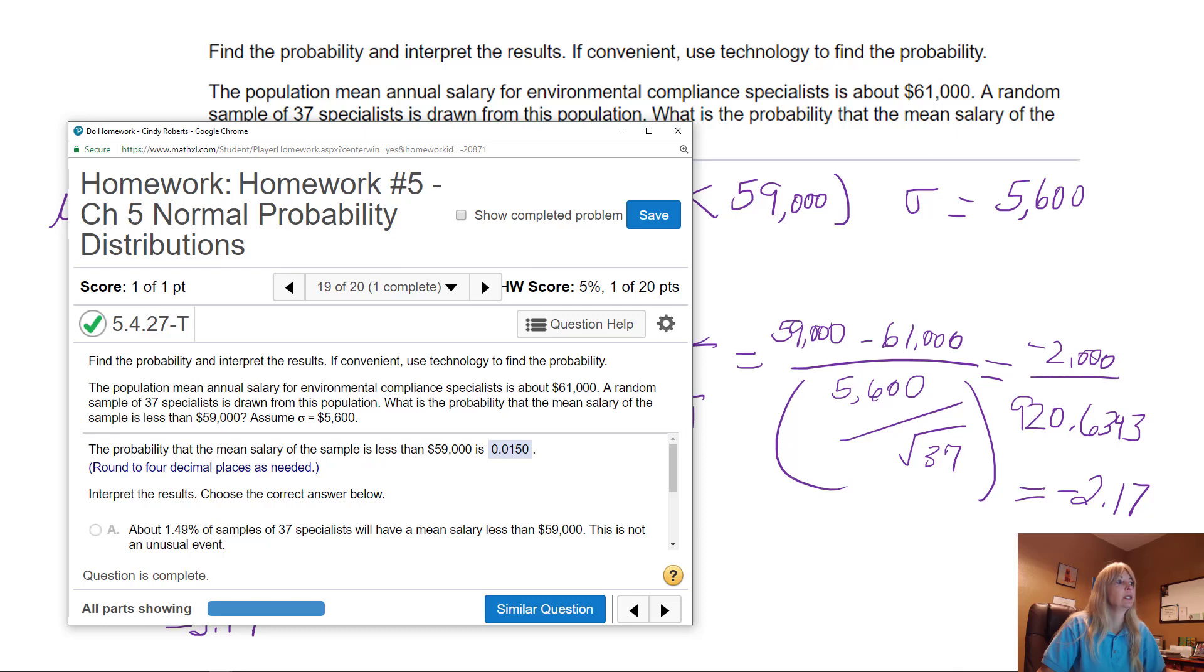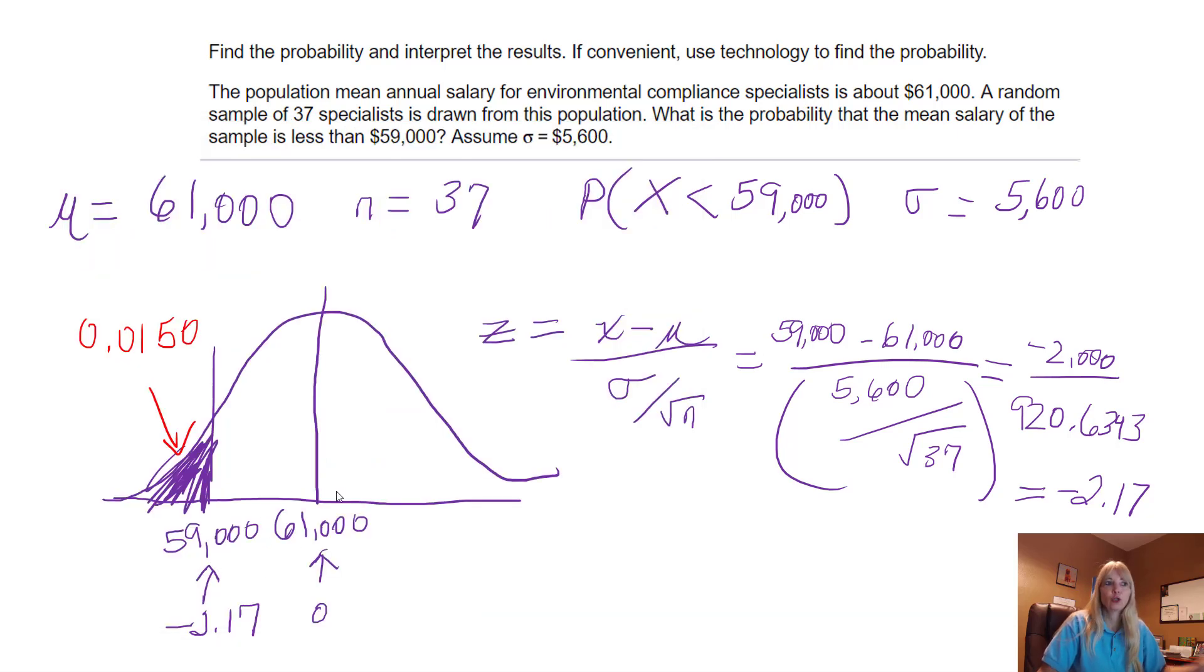Again, why? Because we call things unusual if it's more than two standard deviations away from the mean. Alright? And you know to do this bottom part, the square root of your sample size, if they give you that it's drawn from a particular sample.